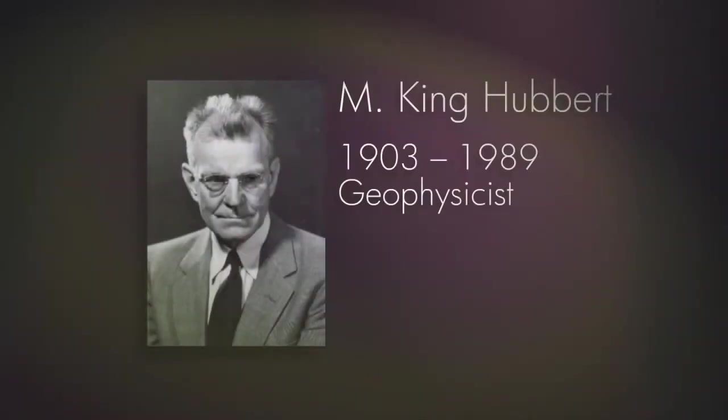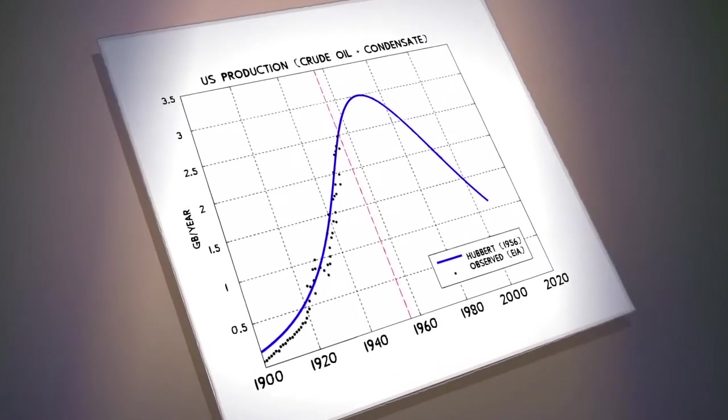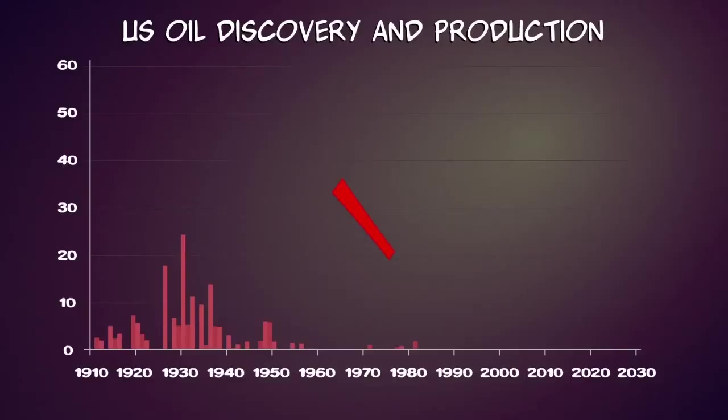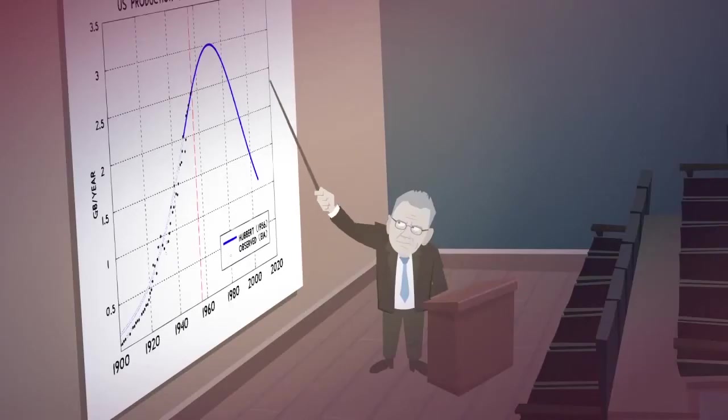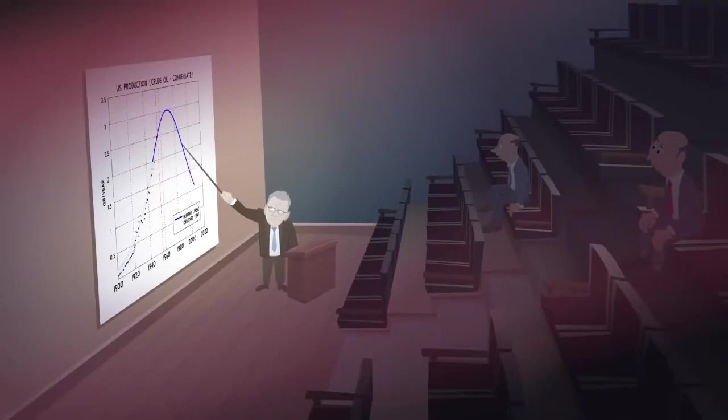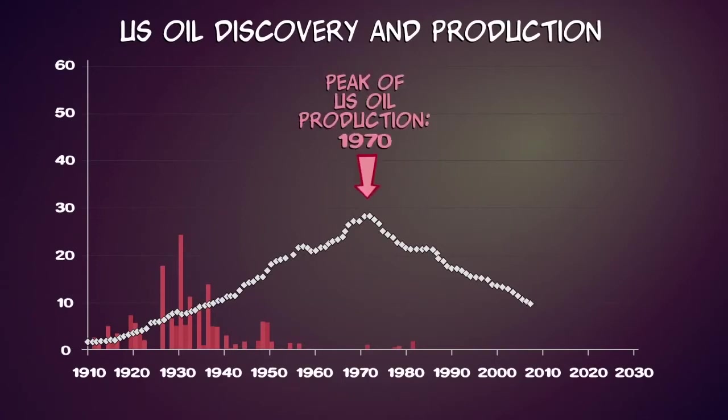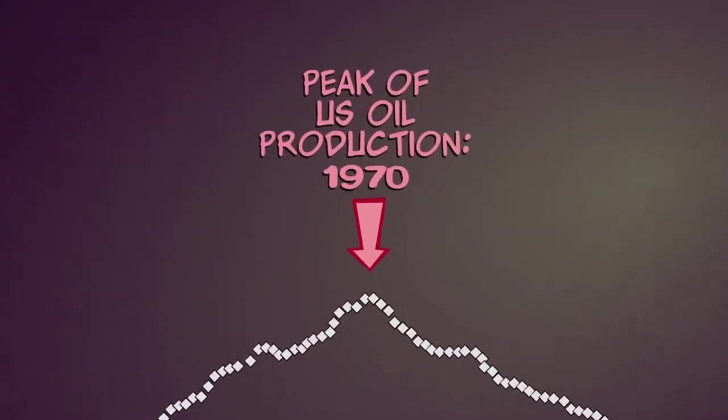In the 1950s, Shell geophysicist M. King Hubbert predicted that America's oil production would peak in 1970, 40 years after the peak of US oil discovery. Few believed him. However, in 1970, American oil production peaked and entered a permanent decline. Hubbert was vindicated.